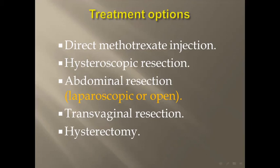Another option, for a special endogenic type, is to leave the pregnancy to continue. In the third trimester, most of these cases develop placenta accreta. This option requires good counseling and informed consent from the patient.